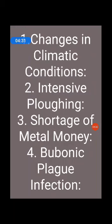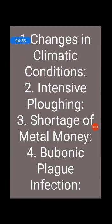Third one is shortage of metal money. Output from silver mines in Austria and Serbia was reduced, which resulted in a severe shortage of metal money, and consequently trade was hit. This shortage of silver forced the government to reduce the silver content of the currency, and the government started to mix cheaper metals into silver to make coins.